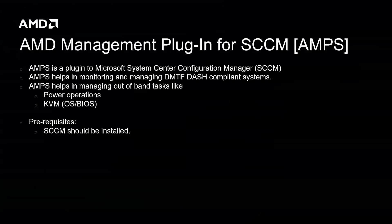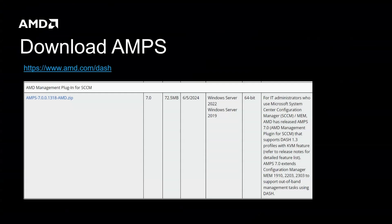Before installing AMPS, ensure that SCCM is already installed and properly configured. You can download AMPS from the official AMD Dash website, where you'll find the latest version compatible with the current SCCM.